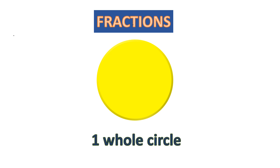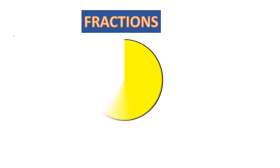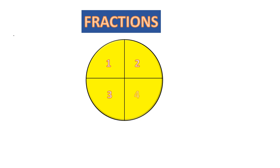Let's understand fractions with the help of a circle. Can you see a yellow circle? It's one whole circle. Now let us draw some lines inside the circle to divide it into four parts. So how many parts are there? One, two, three, four.